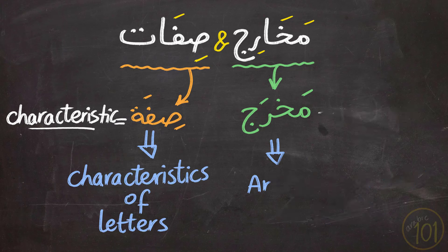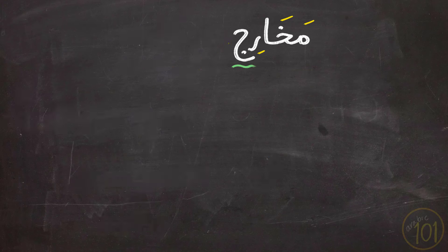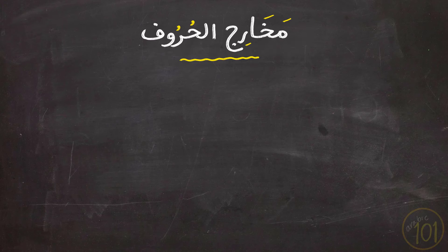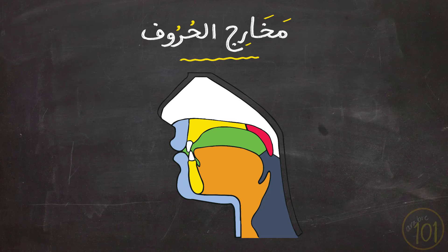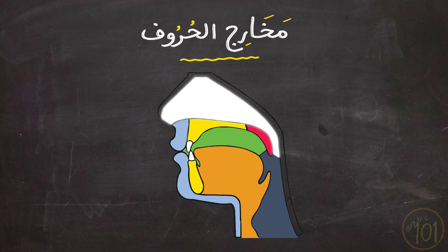Now, let's start with the first and the more basic concept, which is makharij al-huroof. In order to get to know where letters come from exactly, we should first learn this chart to give us an idea about the organs that produce the sounds. The first thing that we notice is that there are five major areas in this chart.